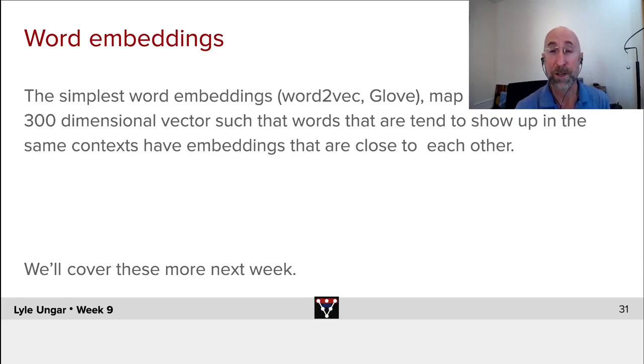Map each word to a vector, a 300-dimensional vector, an embedding, such that words that tend to show up in the same contexts, which are words that we'll define as being distributionally similar, will be close to each other in the embedding space.